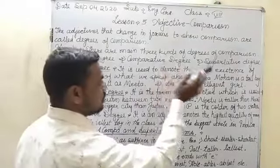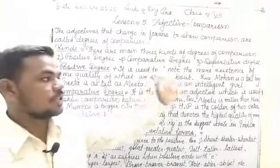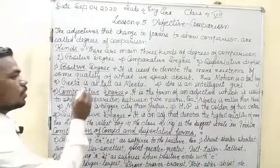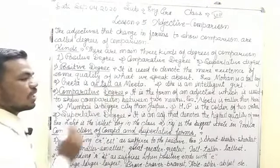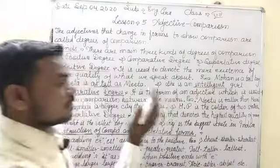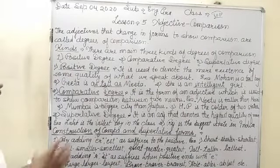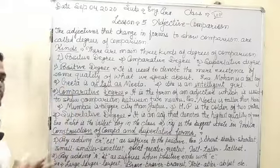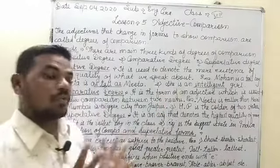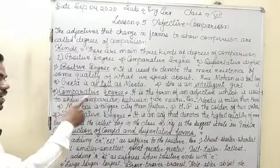Positive degree is used to denote the mere existence of some quality of what we speak about — just like 'Mohan is a tall boy,' 'Gita is as tall as Mita,' 'She is an intelligent girl.' These words indicate positive degree; it shows only the quality of any person in a normal way.